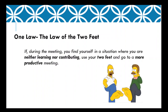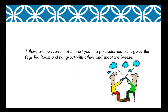Open space is held together by one law called the law of the two feet, which goes like this: if during the meeting you find yourself in a situation where you are neither learning nor contributing, use your two feet and go to a more productive meeting. This gives us the liberty to go from one meeting to another or not participate at all. If there are no topics that interest you in a particular moment, take your two feet and go to the yogi tea room — hang out there with others and shoot the breeze. This meeting room will be labeled 'yogi tea room' in the Zoom list of meetings.